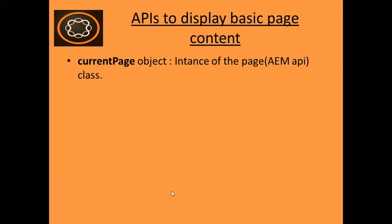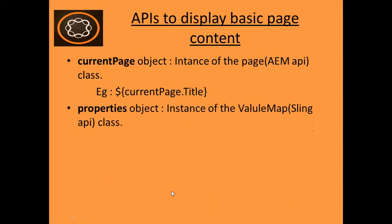So what is the currentPage object? It is actually the instance of the Page class which comes under the AEM API. It provides some methods to access content. For example, in the expression you can write currentPage.title to access the title of a page from the JCR.